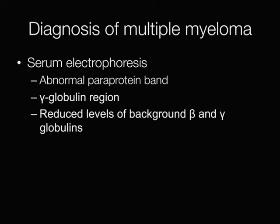Multiple myeloma is diagnosed using a technique called serum electrophoresis, where an electric current is passed through serum impregnated into a gel. This causes the proteins to separate into different bands, and an abnormal paraprotein band is produced in the gamma globulin region in myeloma.